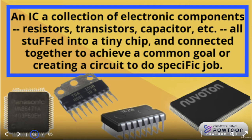An IC is a collection of electronic components — resistors, transistors, capacitors, LEDs — that are stuffed into a very tiny chip or component. They are connected together to achieve a common goal, or a specific job, performing a specific function in the circuit.